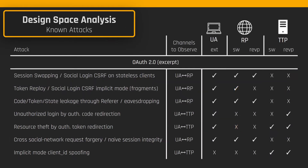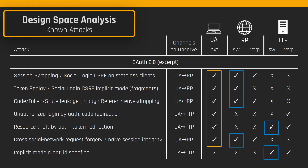Let us now look at a list of known attacks against web protocols. The table shows a selection of known attacks against OAuth 2.0. For each attack, we show which channels need to be visible to detect the vulnerability, and whether the attack can be prevented by an extension, a service worker, or a proxy on the RP or TTP. In general, the browser extension is the most powerful tool, as it can mitigate most attacks by itself, with the exception of the last attack that can only be detected by the TTP. The service worker on both RP and TTP offers a comparable amount of protection, but has issues when these service workers need to inspect cross-origin values. By using a combination of service workers and proxies, we can offer transparent protection that performs better than browser extensions.